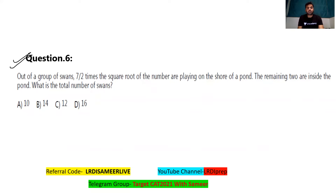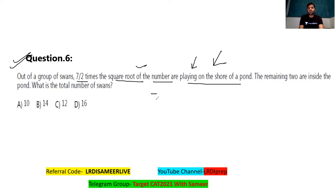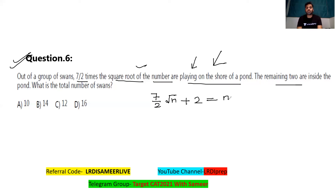Question number six from the previous year MAT paper: out of a group of swans, seven-by-two times the square root of the total number are playing on the shore of the pond, and the remaining two are inside the pond — that equals the total number of swans. This is the equation to solve. Looking at the options, n needs to be a perfect square to take the square root.